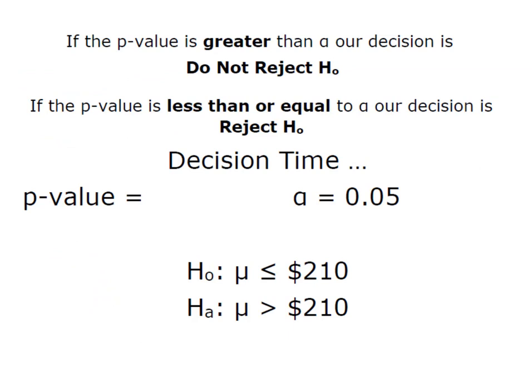Remember that our decision criteria under a p-value approach is if the p-value is greater than alpha, our decision will be do not reject H0. If the p-value is less than or equal to alpha, then our decision will be to reject H0. Remember when p is low, H0 must go.